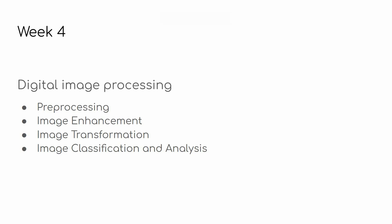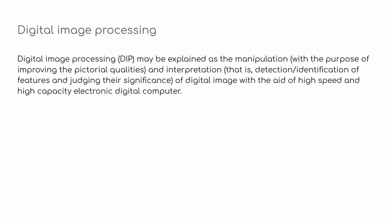This week we'll be talking about digital image processing. We'll cover the stages involved: pre-processing, image enhancement, image transformation, and image classification. Digital image processing basically consists of all the operations performed on an original image, like a satellite image, to improve its quality.